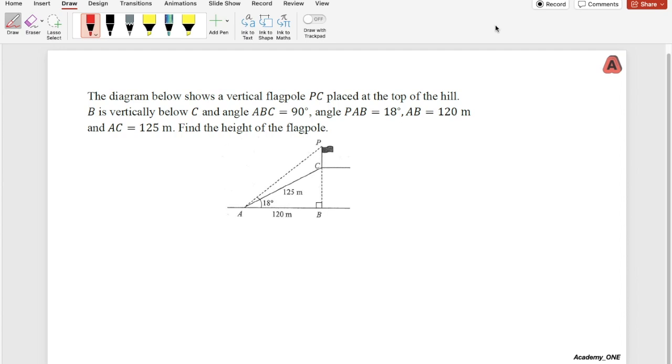Questions on trigonometry functions. As per the diagram below, it shows a vertical pole PC. This is the pole placed on top of the hill. B is vertically below C, and angle ABC...